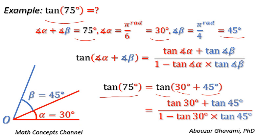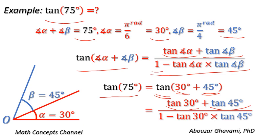Using the equation for tangent of addition of two angles, we have tangent of 30 degrees plus 45 degrees equals tangent of 30 degrees plus tangent of 45 degrees divided by 1 minus tangent of 30 degrees times tangent of 45 degrees.